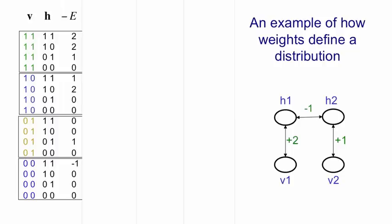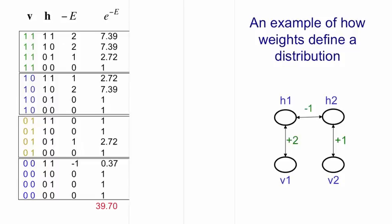We then take the negative energies and we exponentiate them. And that will give us unnormalized probabilities. So these are the unnormalized probabilities of the configurations. Their probabilities are proportional to this.